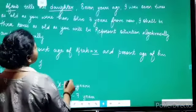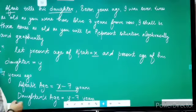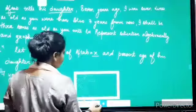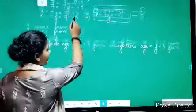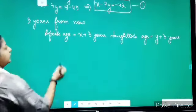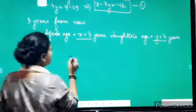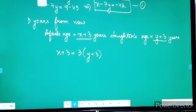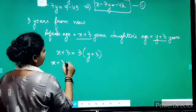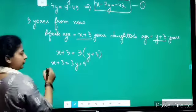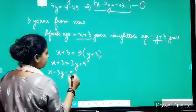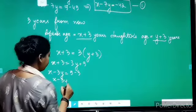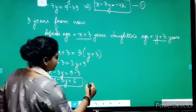The relation given to us is: 3 years from now, Aftab shall be 3 times as old as his daughter. That means x plus 3 equals to 3 times (y plus 3). Simplifying, we get x plus 3 equals to 3y plus 9, so x minus 3y equals to 6. This is our equation number 2.